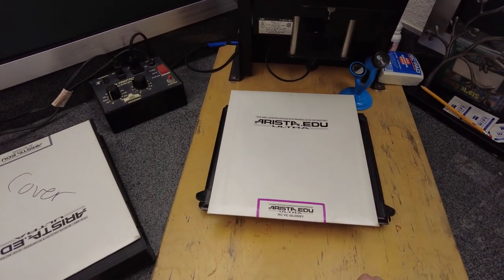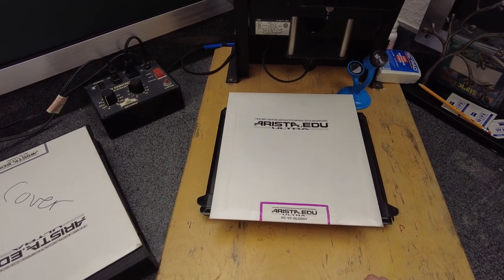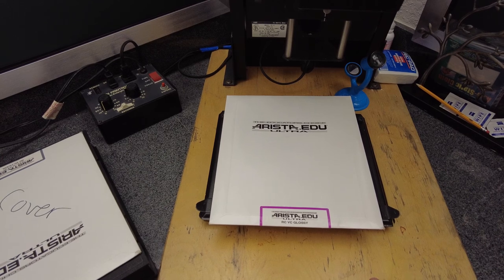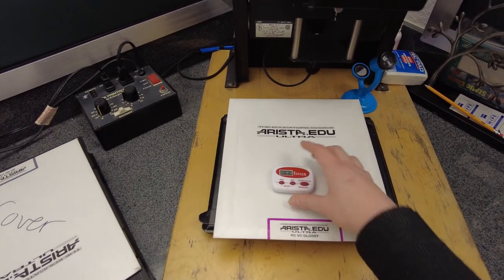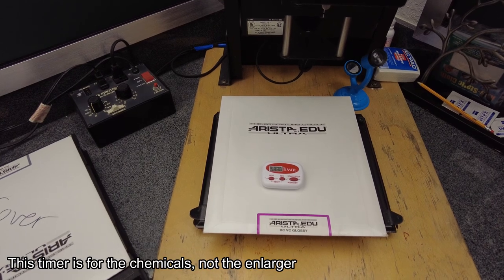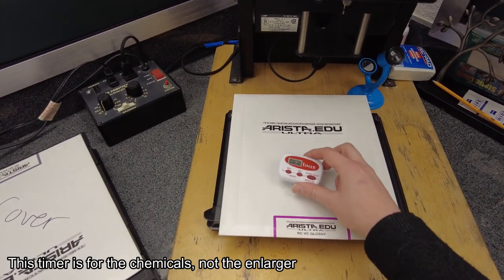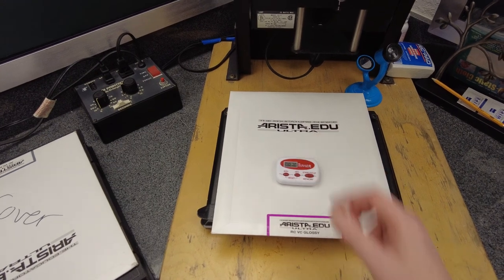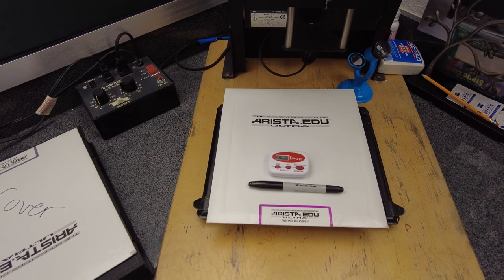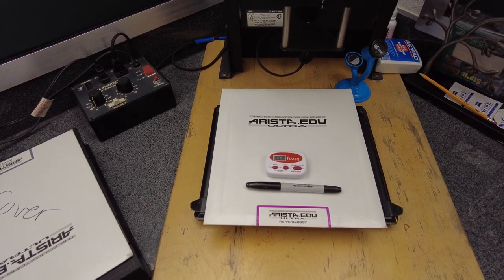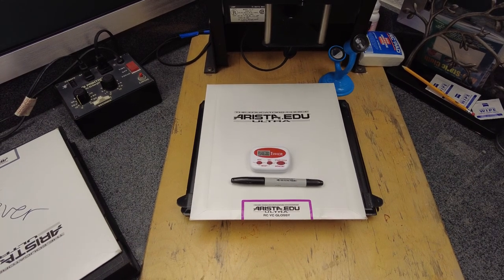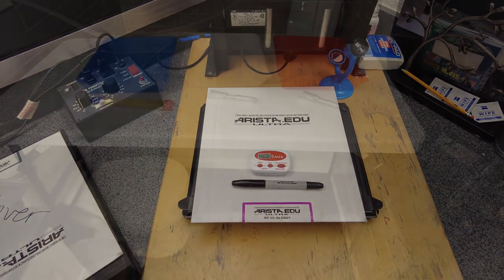Of course you will need some photo paper. RC paper is going to be a really good paper to get started with. You'll want some sort of timer that works well in the dark room. This timer does not emit any light and I got it from the dollar store. And then finally you'll need some sort of permanent marker so that way you can write on the back of your photo paper and make notes. That way you know what you did so you can make adjustments from there.